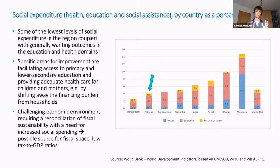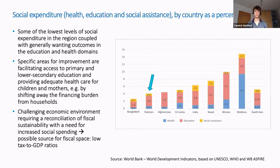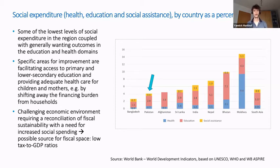High levels of out-of-pocket health expenditure come with poor performance indicators — including underweight prevalence, mortality rates, immunization rates, and skilled birth attendance. It is important to shift this burden and provide adequate care, particularly for children and mothers. Encouragingly, the recent COVID-19 budget provides for more than a doubling of the health budget in Pakistan. On non-contributory social protection, Pakistan spends less than 1% of GDP, most of which accrues to the Benazir Income Support Program unconditional cash transfer. The ASPIRE dataset may inadequately cover subnational spending, which plays a pivotal role in Pakistan.